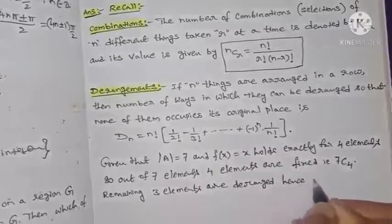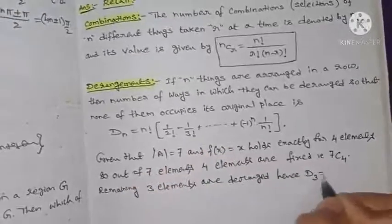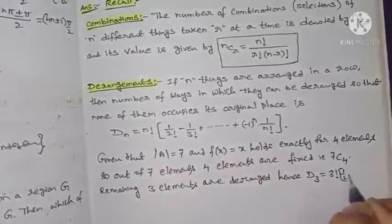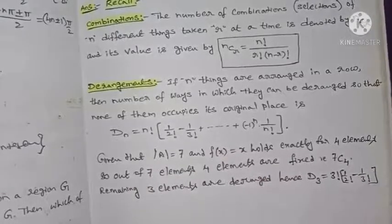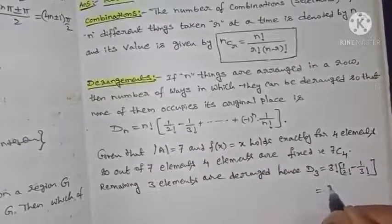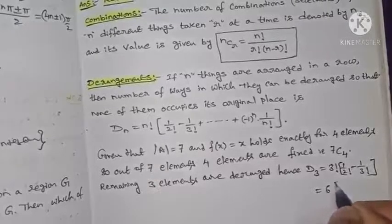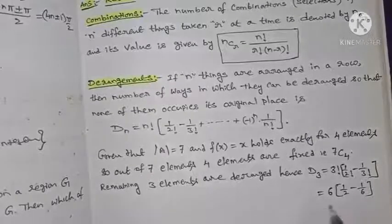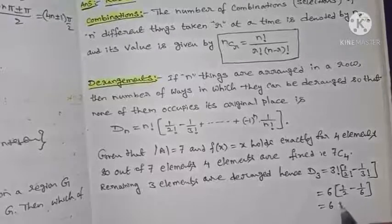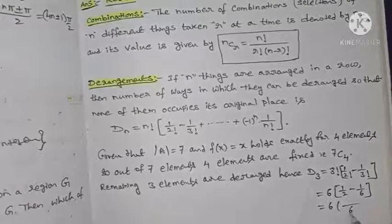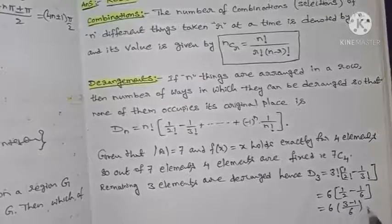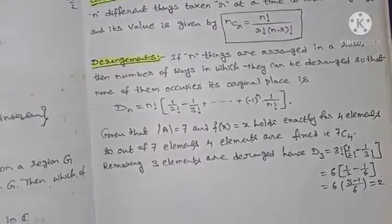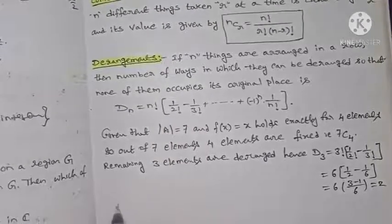We compute D3: D3 = 3! × (1/2! − 1/3!) = 6 × (1/2 − 1/6) = 6 × (2/6) = 2. So D3 = 2.